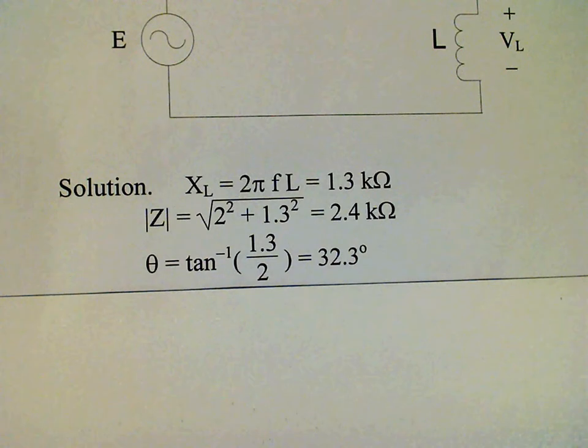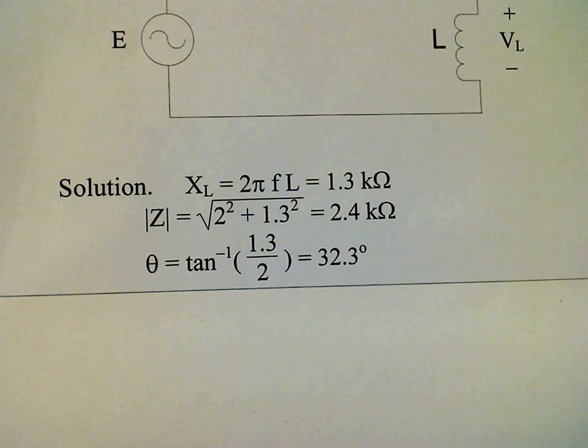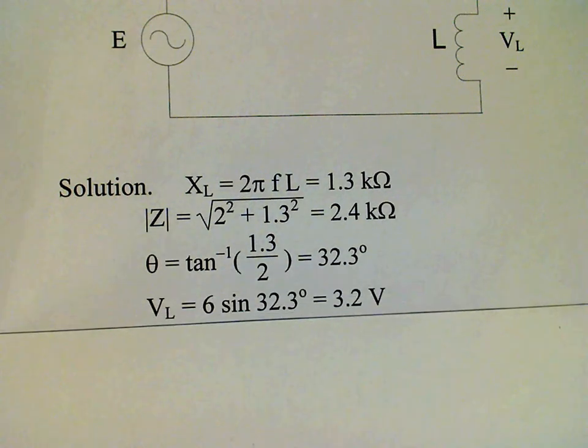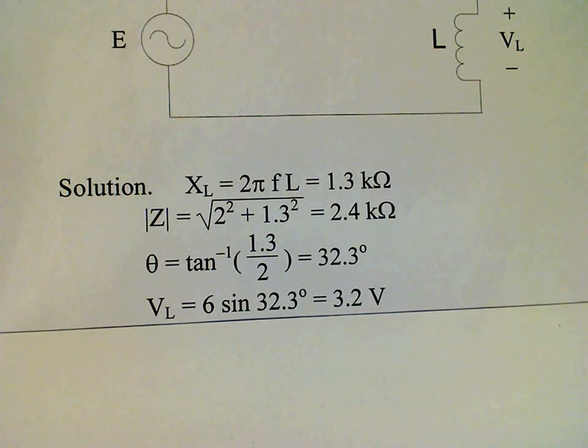Now we can use the phase angle to compute the component voltages. The voltage across the inductor is E times the sine of theta. So 6 times the sine of 32.3 degrees gives us 3.2 volts across the inductor.